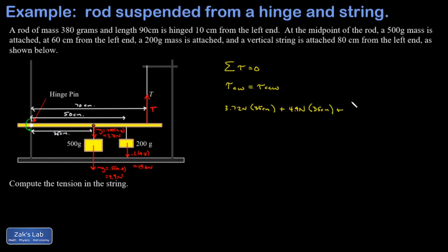Another clockwise torque, the 200 grams that has a weight of 1.96 newtons. And it was exerted through a lever arm of 50 centimeters. That's all going to be equal to our counterclockwise torques with respect to this rotation axis. And there's only one of those. It's the tension pulling up through a lever arm of 70 centimeters. So the unknown tension pulling through 70 centimeters.